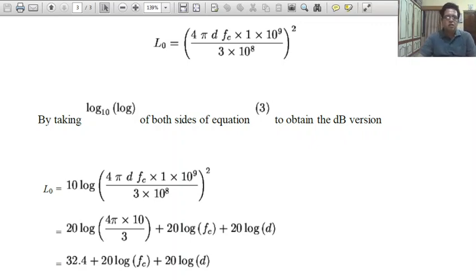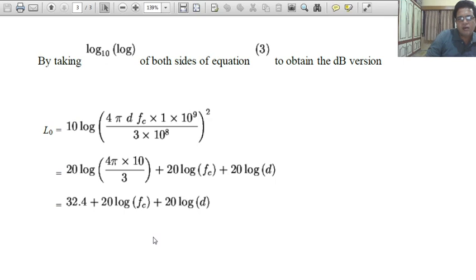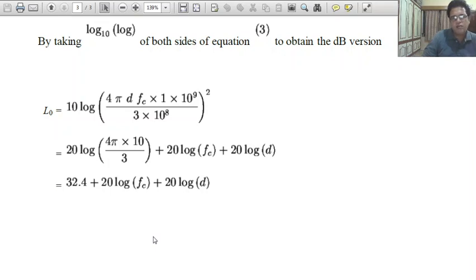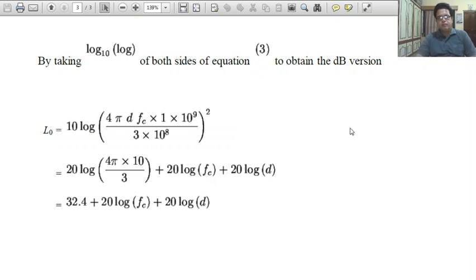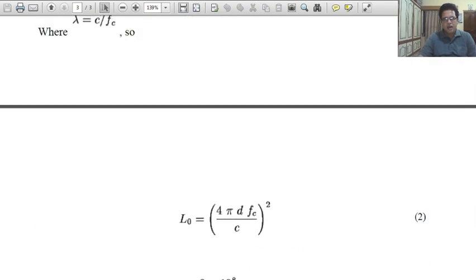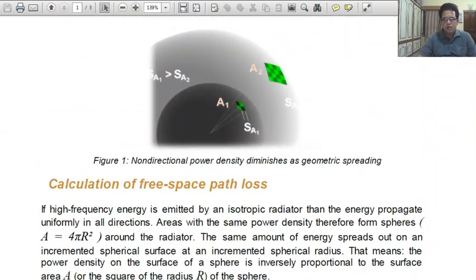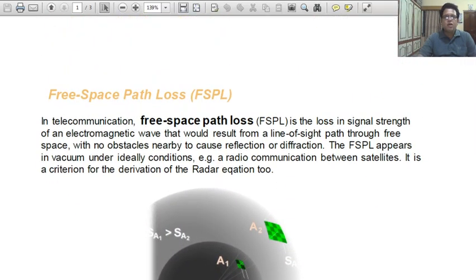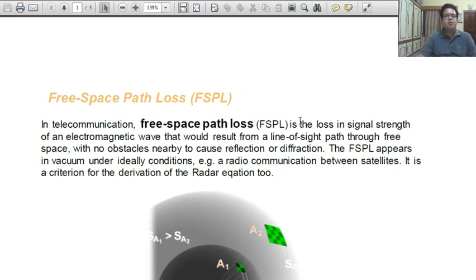Plus 20 log fc plus 20 log d. So there are parts. This is the form of how you can convert it into dB decibel form. In next lecture, we again clear it with taking a similar article form, different approach, so you can understand more comfortably the concept of free space path loss.